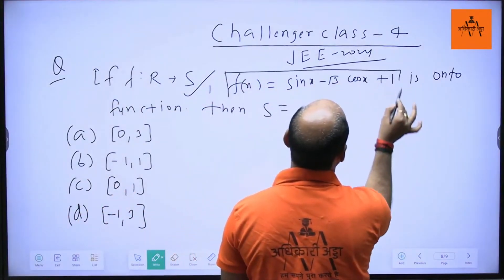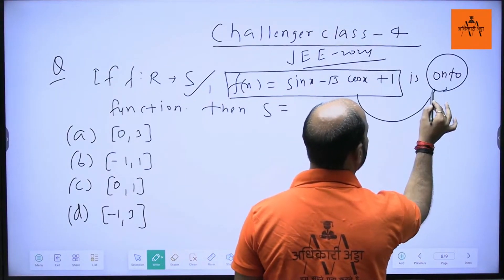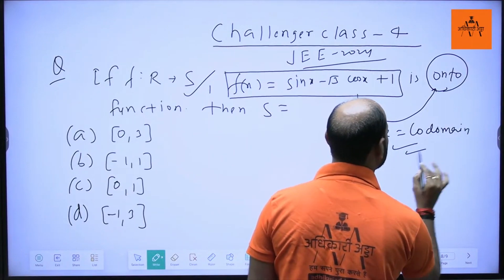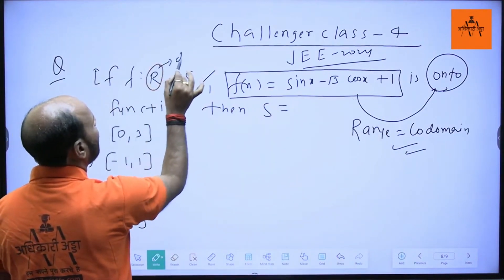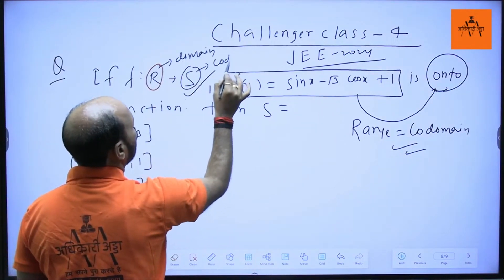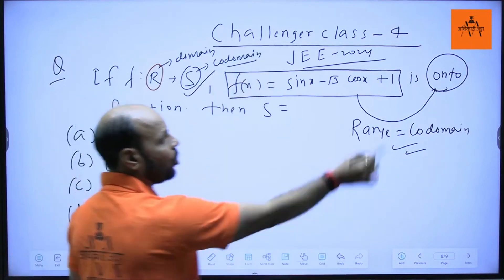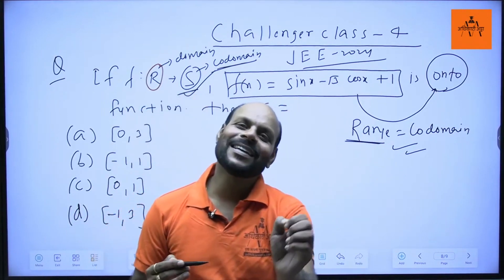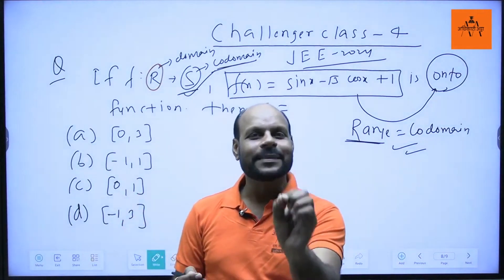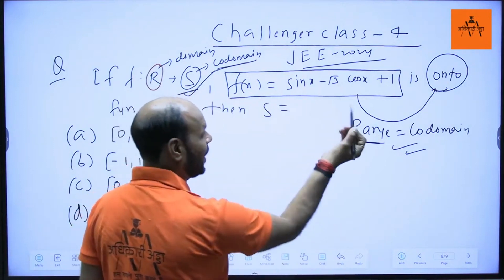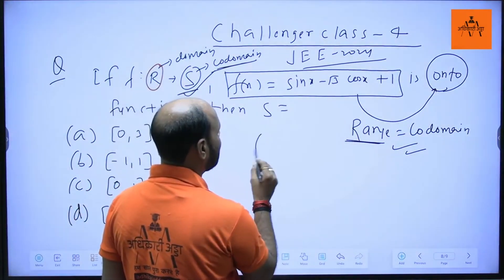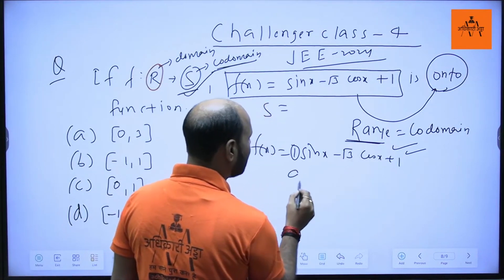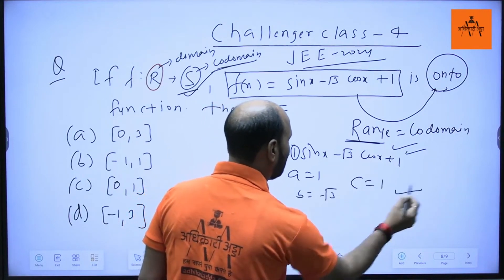When a function is onto, the range equals the co-domain. So we need to find the range. For f(x) = sinx - √3cosx + 1, we have a = 1, b = -√3, c = 1. The range formula gives: [c - √(a² + b²), c + √(a² + b²)].